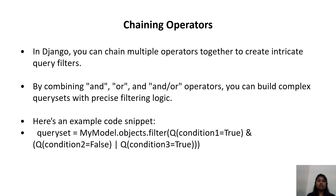Chaining operators: In Django, you can chain multiple operators together to create intricate query filters. By combining AND, OR, and AND/OR operators, you can build a complex query set with precise filtering logic. Example: query_set = MyModel.objects.filter(Q(condition1=True) | Q(condition2=False) & Q(condition3=True)).